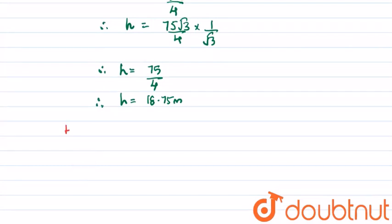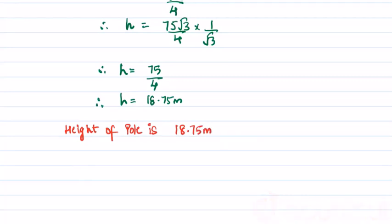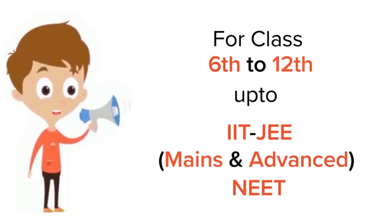So from this we found that the height of pole is 18.75 meters. For class 6 to 12, IIT JEE and NEET level, trusted by more than 5 crore students, download Doubtnet app today.